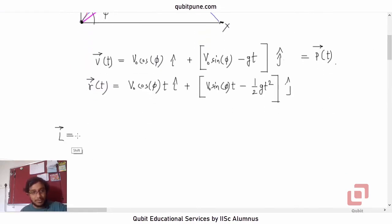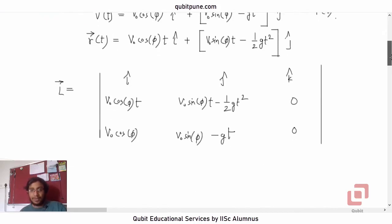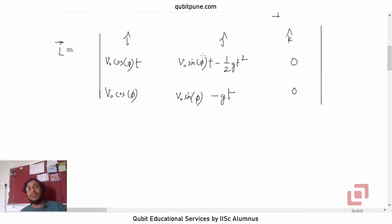So this is L bar equal to R bar cross V bar. Cross product. So i, j, k. None of them has k component. So it is V naught cos phi, sorry. R bar first. V naught cos phi t. V naught sin phi t minus half g t squared. V naught cos phi. V naught sin phi minus g t. There is no need to actually get the i and j components here because they are 0. So let us go to k cap directly.